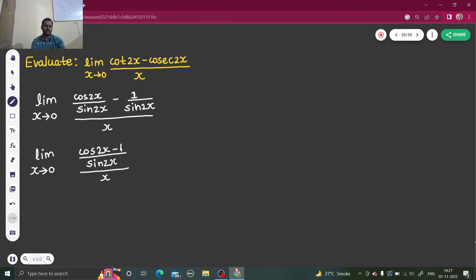So this sine 2x can go in denominator. So I will get cos 2x minus 1 over x sine 2x.